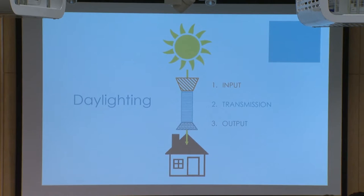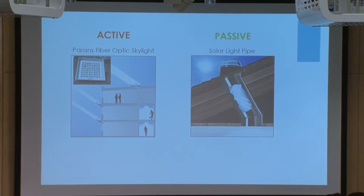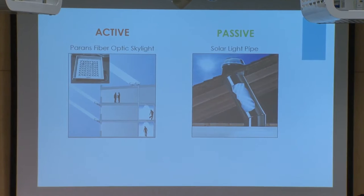There have been many daylighting systems that have reached commercial markets over the past few decades, and they can be roughly categorized into two groups: active and passive systems. Active systems make use of mechanical tracking systems that track the movement of the sun across the sky. For passive systems, they are designed to remain stationary but capture as much light as possible.